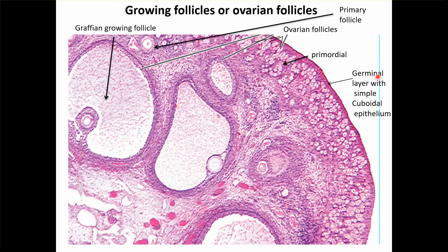The lining is the germinal layer with simple cuboidal epithelium. Very close to it, all the small follicles are called primordial follicles; the little larger ones are primary follicles; and these will be the secondary follicles. This area represents the cortex which has follicles, and this area is the medulla which has blood vessels, connective tissue, and lymphatics.